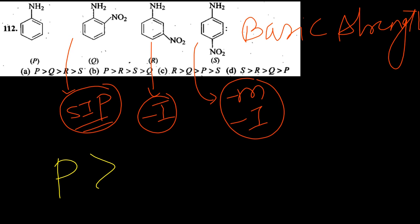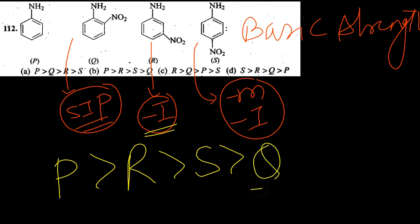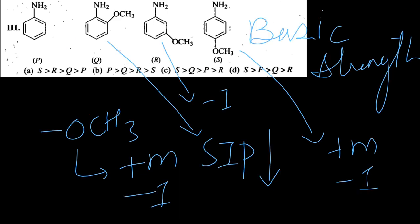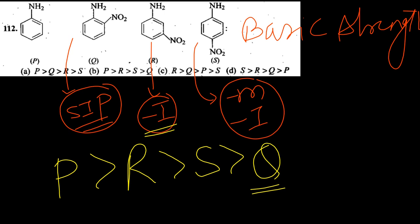After P comes R (inductively withdrawing, less effect). Then comes S, and after S comes Q because SIP decreases basic strength greatly. This exception about methoxy compounds - remember that in methoxy aniline case, ortho is placed above meta due to plus M, minus I, and hydrogen bonding even with SIP.